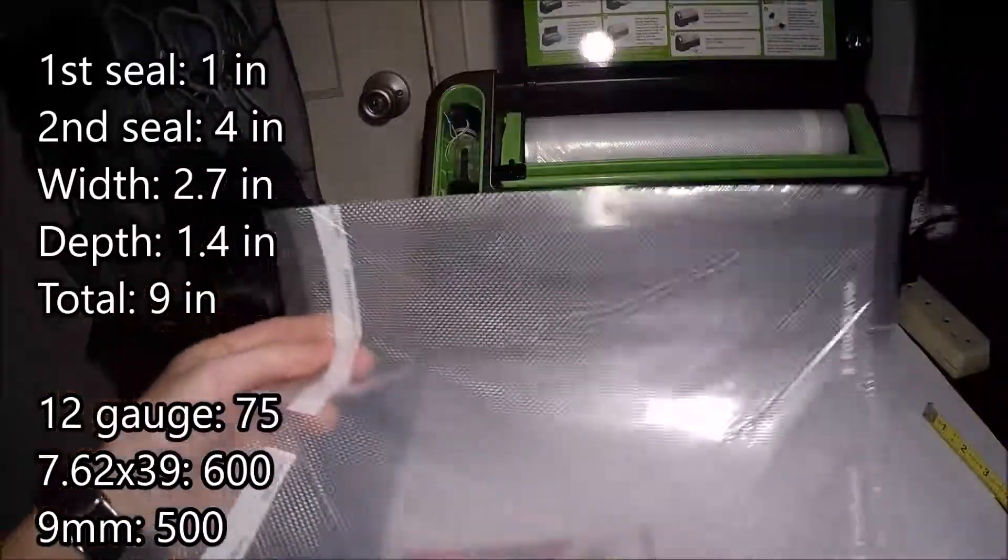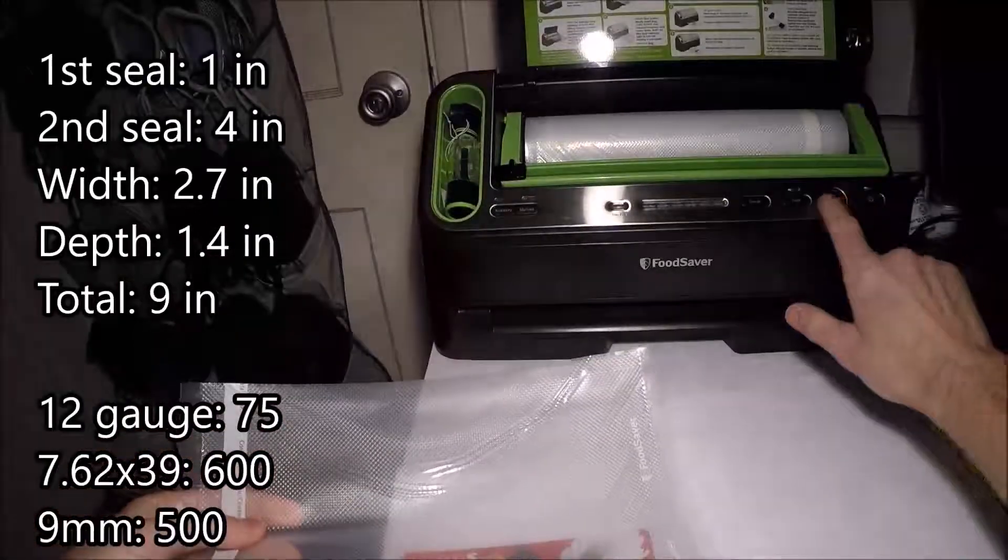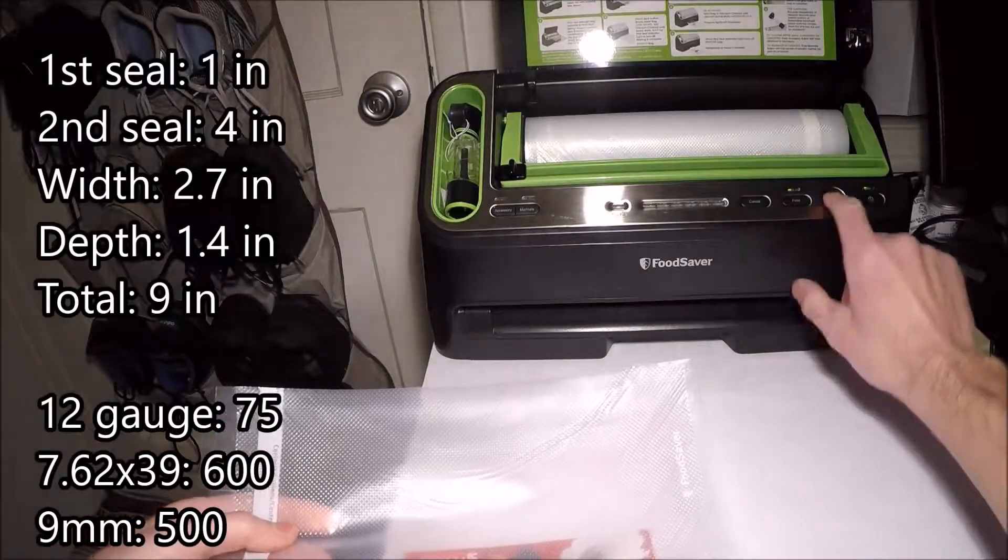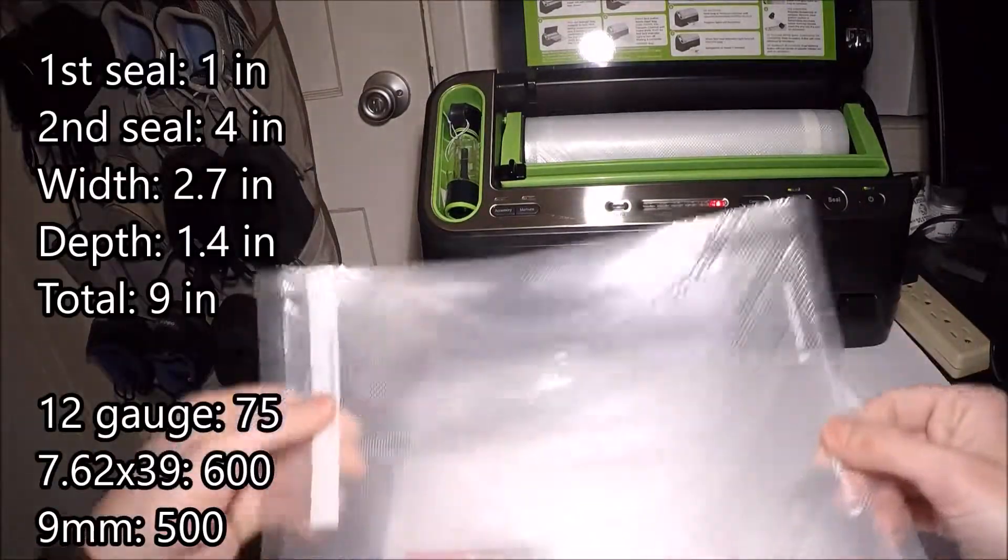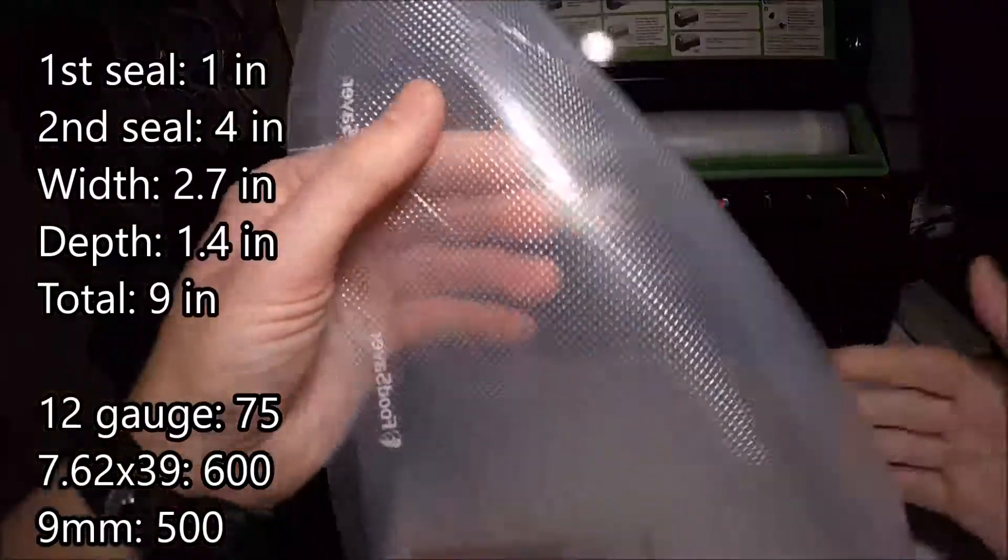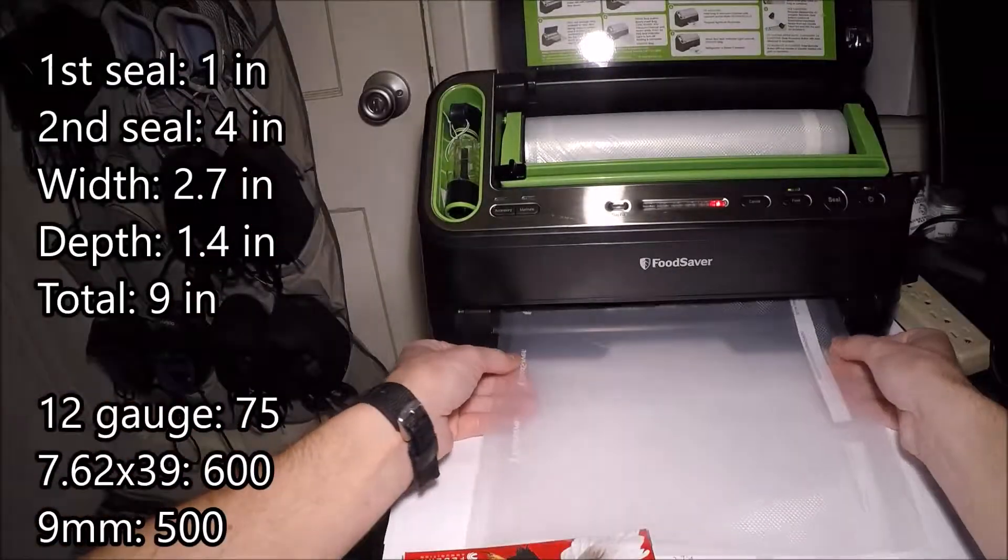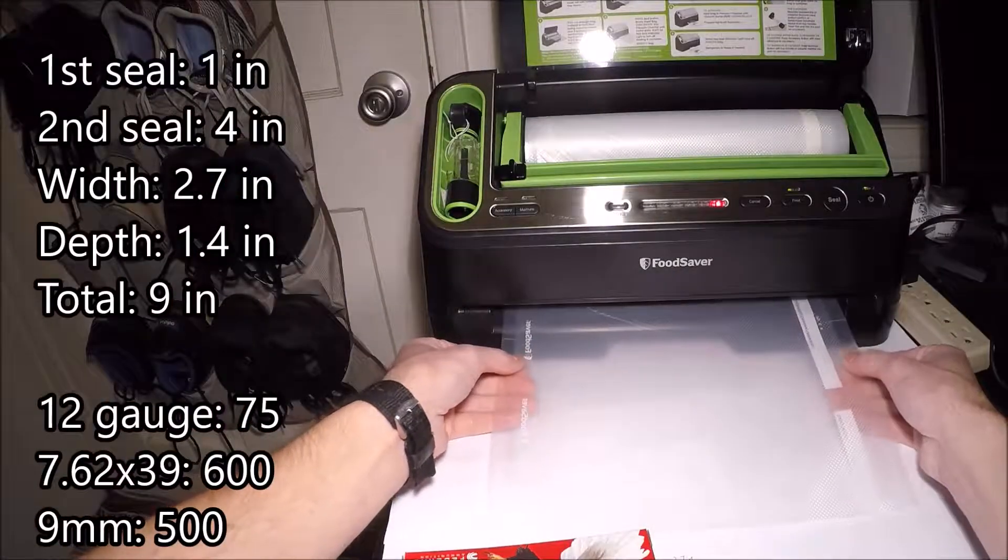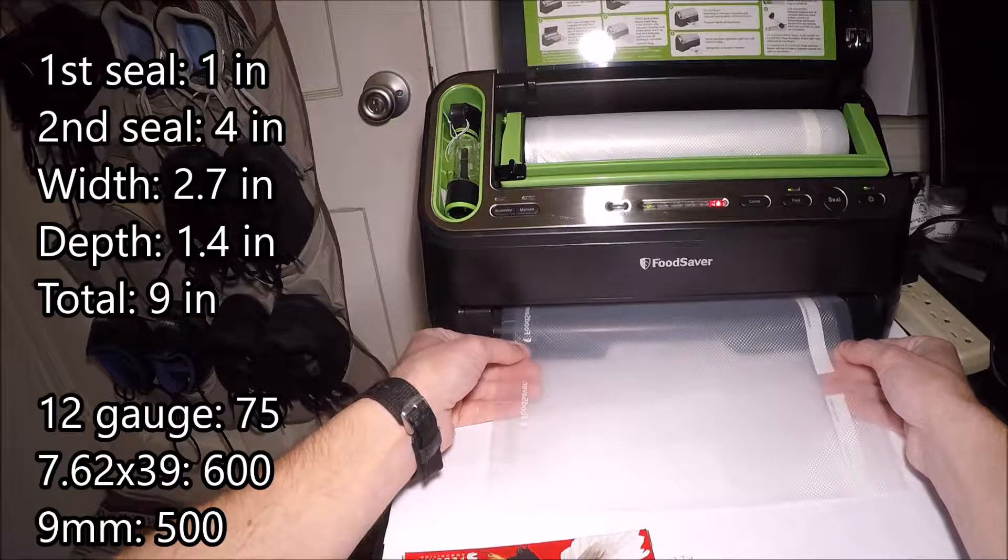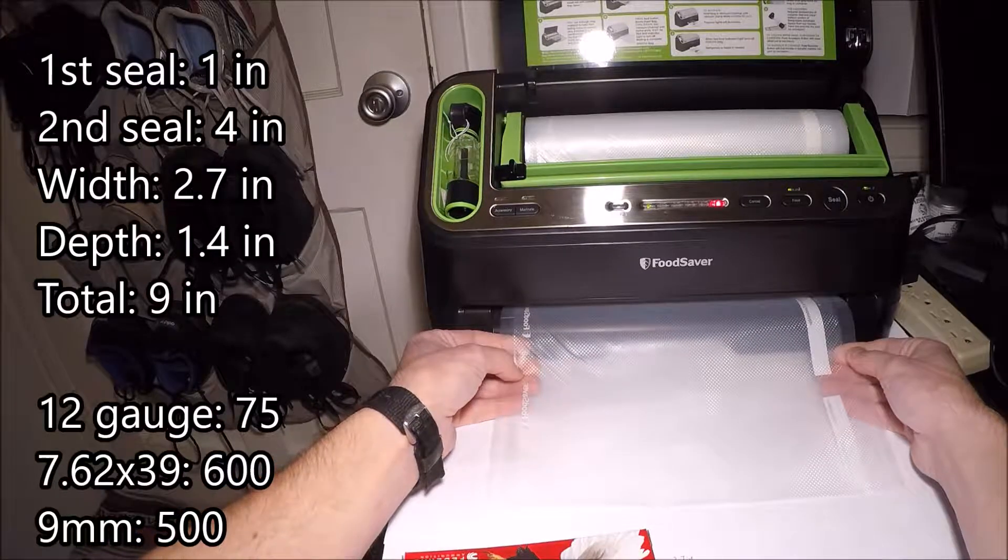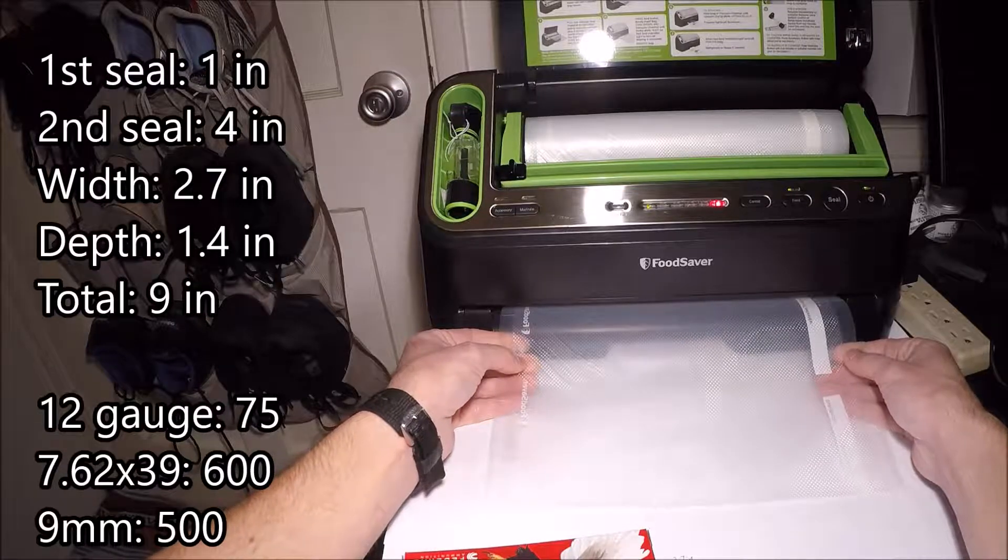We need to seal off one end of this bag of course, so our machine's already on. We're in the seal mode, we see the red light of death, and so we just need to go ahead and feed it inside and let the machine seal off one end of the bag. It's kind of like a sleeve, it's about to become a bag if you want to be technical about it.